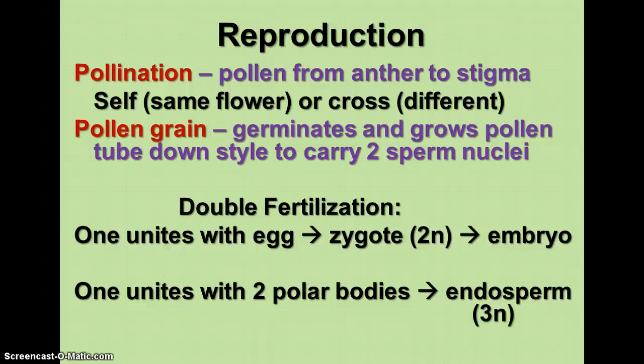In reproduction, pollination in flowering plants and even in gymnosperms is how reproduction occurs. Pollen is transferred from the anther to the stigma, and flowers can be self-pollinated — within the same flower — or cross-pollinated from a different flower. The pollen grain germinates and grows a pollen tube down the style carrying two sperm nuclei. Most angiosperms undergo double fertilization: one sperm nucleus unites with the egg to produce the zygote that grows into the plant embryo, and the other unites with two polar bodies to form the endosperm — a triploid structure that provides food for the growing embryo. We'll discuss endosperm more when we talk about germination.